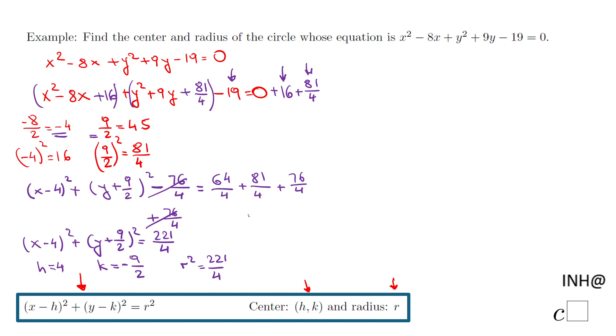And now the radius squared, that will be this guy 221/4. So we have the center, right? That's one thing we're looking for: (4, -9/2) or -4.5 if you want the decimal form. And the radius, how do we get the radius? We take square root of this 221/4, that will be √221/2.